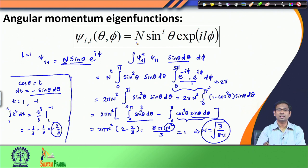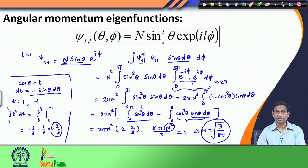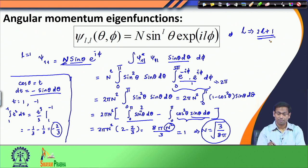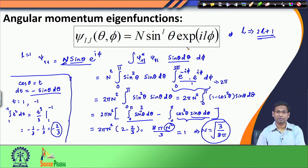Similarly, when l is 2 the function will be sin^2(theta) times e^(2i*phi), and so on for higher values of l. In each case I can of course normalize the function. This way of writing down the function gives, for a given value of l, exactly 2l+1 eigenfunctions, but this expression is valid for only one of these 2l+1. What about the remaining functions?